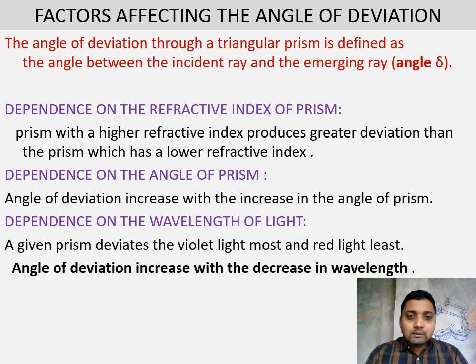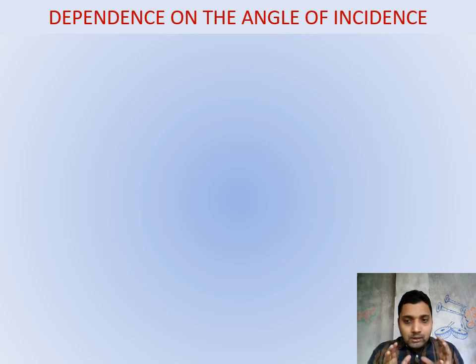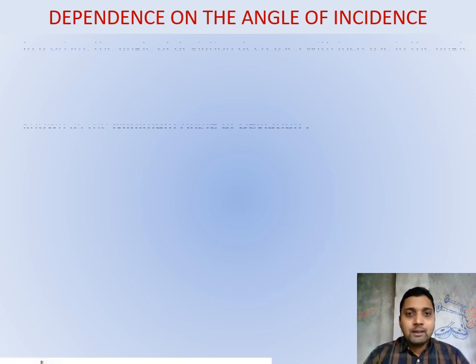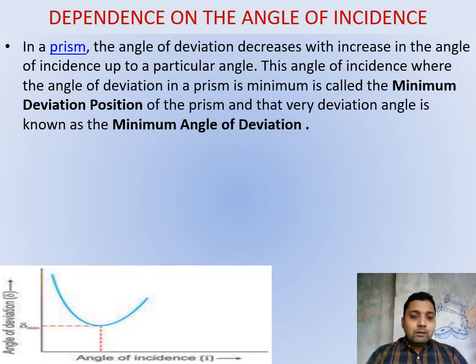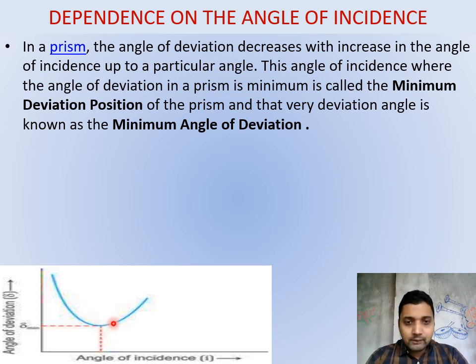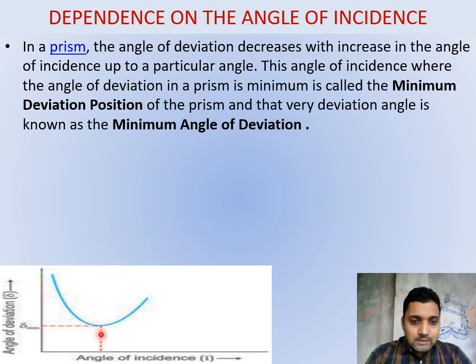The fourth factor is the angle of incidence. As we increase the angle of incidence, the angular deviation first decreases, reaches a minimum, and then increases again. This is shown in a graph where the deviation curve dips to a lowest point.